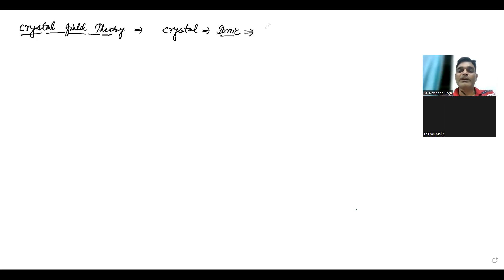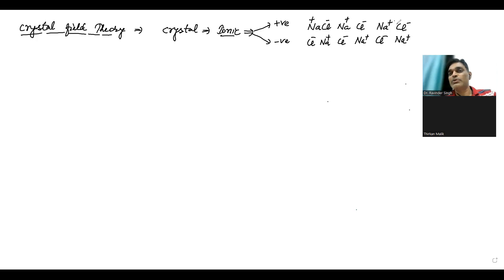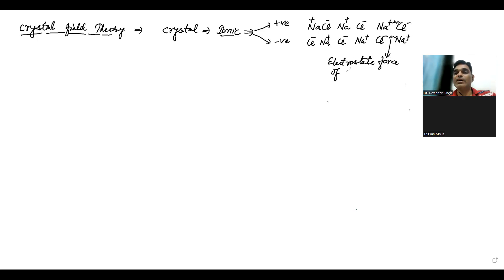As you have studied before, in ionic compounds there are positive and negative ions. For example, in NaCl: Na positive and Cl negative. If you see the crystal lattice, Na positive, Cl negative alternate in layers — positive and negative interaction, that is the complete electrostatic force of attraction. This electrostatic force of attraction represents ionic interactions, and the same type of interaction is explained by the Field Theory, which is why it is called the Crystal Field Theory.